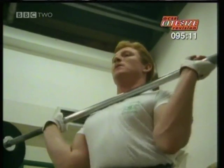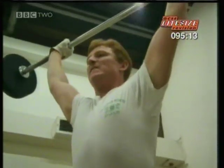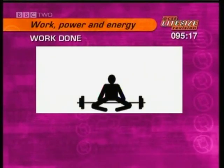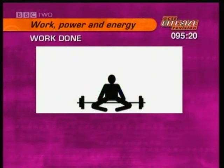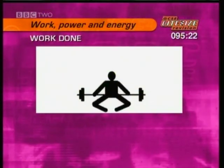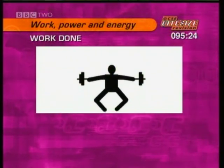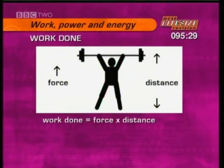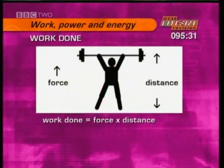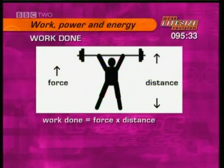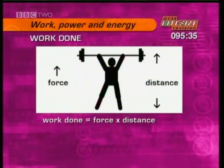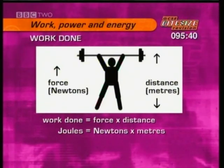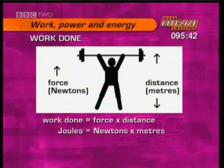When you lift a weight, you do some work. The energy transferred from the weightlifter to the weights can be measured by the work done. The work done lifting the weights depends on the size of the force and the distance the force moves. There's an equation for this: work done equals force times distance. The unit of measurement for energy and work done is the joule — the work done in joules equals the force in newtons times the distance in metres.